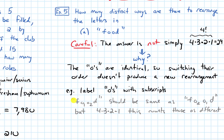Right now it's counting the word 'food' twice, because if we were to switch the O's it's actually the same word, but doing 4 × 3 × 2 × 1 is counting that as a different word. So as a result, we are overcounting.